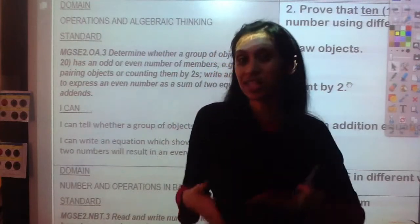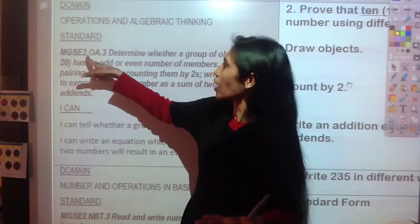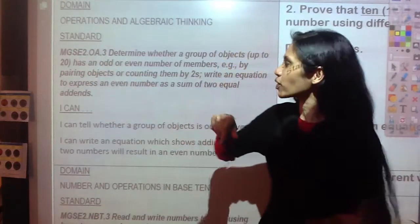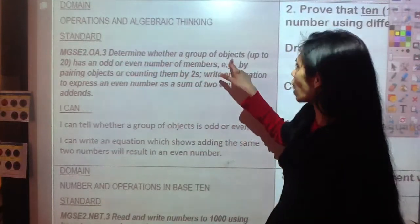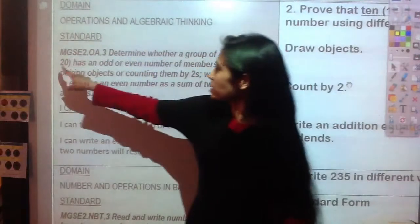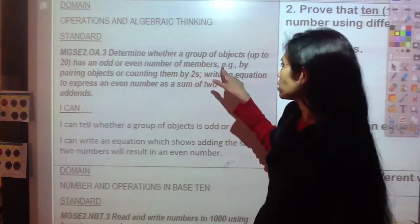It's MGSE2.OA.3. Let's read that together. It says: determine whether a group of objects up to 20 has an odd or even number of members, for example, by pairing objects or counting them by twos.